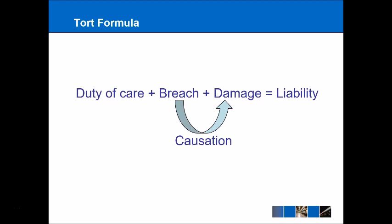Perhaps even the claimant themselves helped contribute towards their own damage. This brings us on to the last element of damage. If you asked a random person on the street what damage means, they might give you examples of a physical injury such as a broken leg. But the law goes much further than this and can include things such as psychological harm, and even damage to a person's reputation. These are all things which people should be able to claim compensation for.